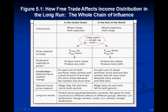In the long run, product prices equalize between countries, with net gains for both countries but different effects on different groups. The winners in this scenario are US landlords and foreign workers. The losers are US workers and the rest of the world's landlords in the wheat sector. As you can see, the Heckscher-Olin theory demonstrates how in the short run there might be some advantage in the expanding sector, but in the long run it all comes to equilibrium.